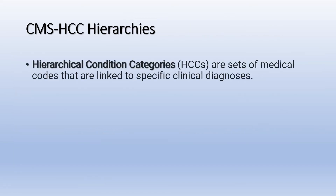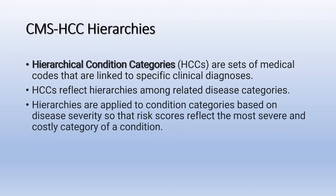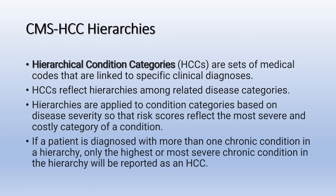Hierarchical condition categories are sets of medical codes that are linked to specific clinical diagnoses. HCCs reflect hierarchies among related disease categories. Hierarchies are applied to these condition categories based on disease severity so that risk scores reflect the most severe and costly category of a condition.